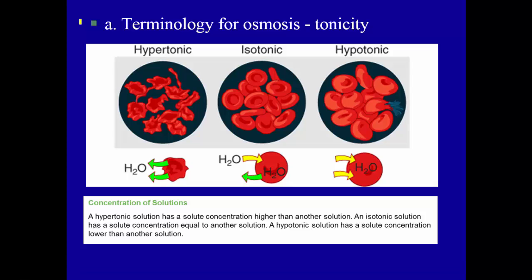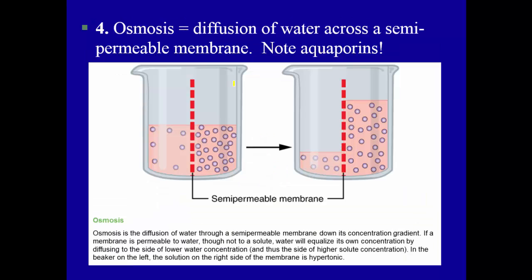Let's keep working on this idea of osmosis by focusing on the terminology we often run into. In the world of medicine and physiology, we're often only given one side. For example, in this image, the terms hypertonic, isotonic, and hypotonic are always referring to the extracellular fluid — we are not told about the intracellular or cytoplasmic fluid. Instead of telling us both sides, they only tell us one.